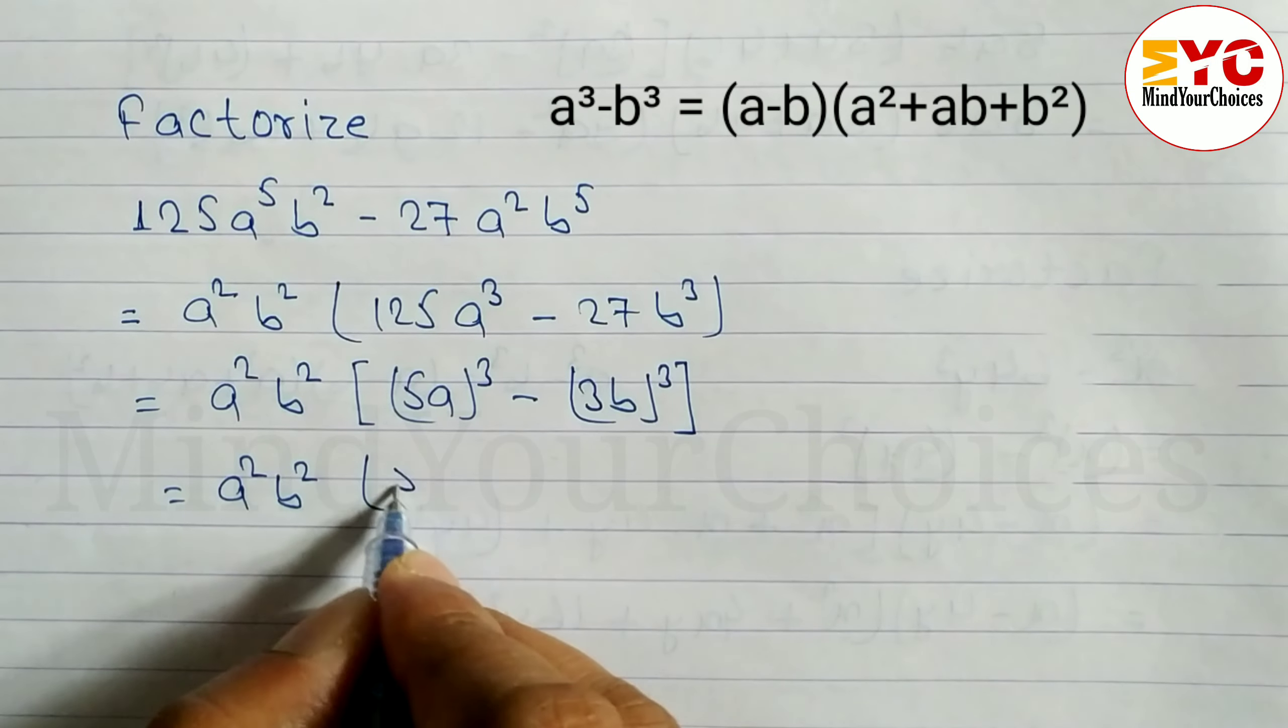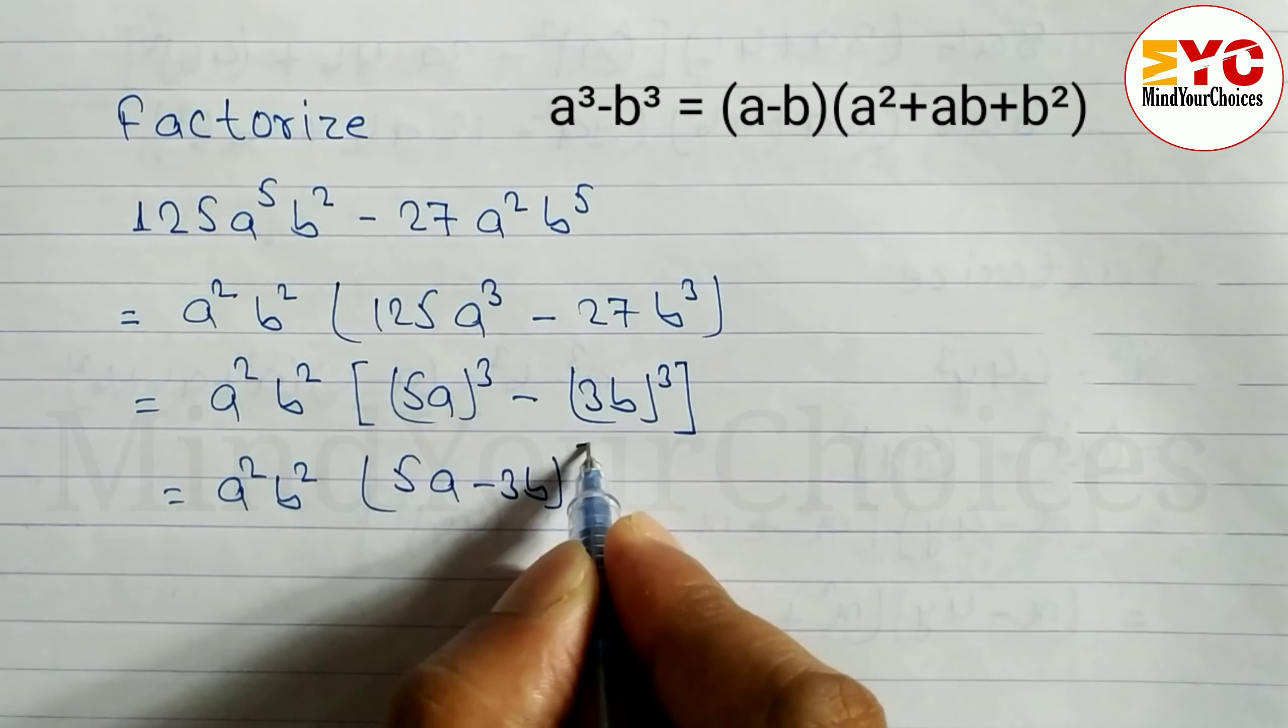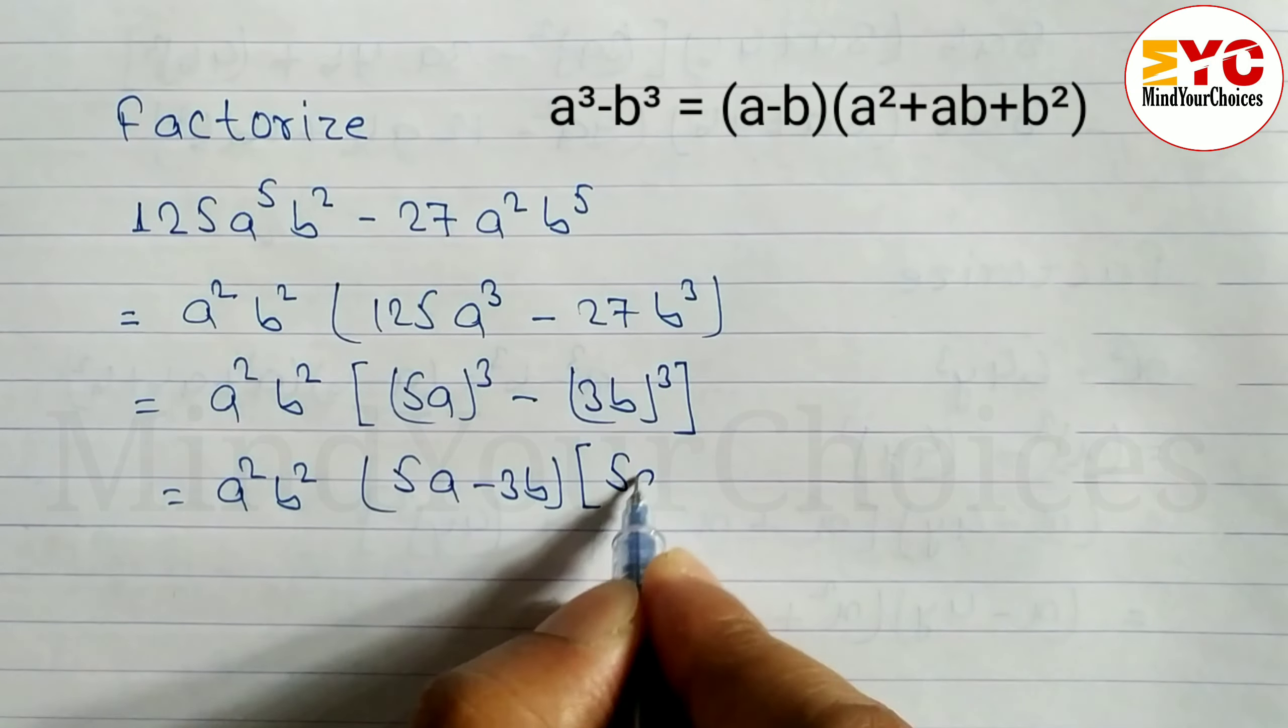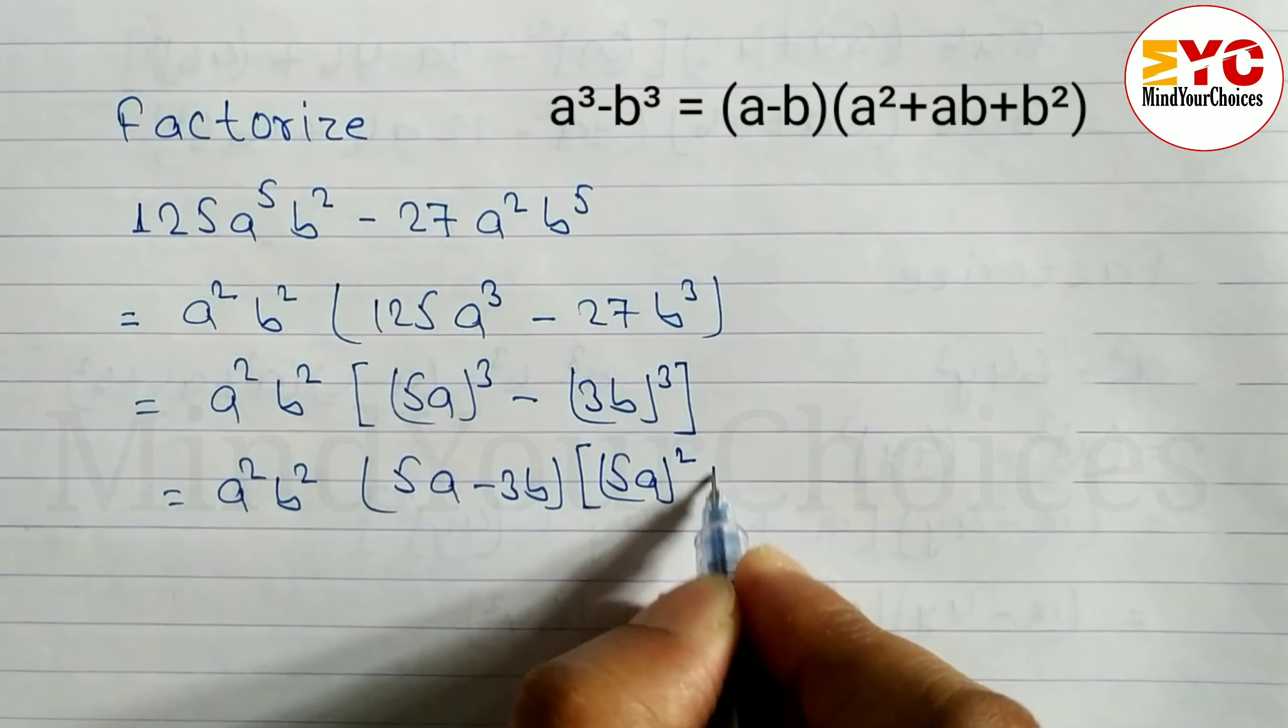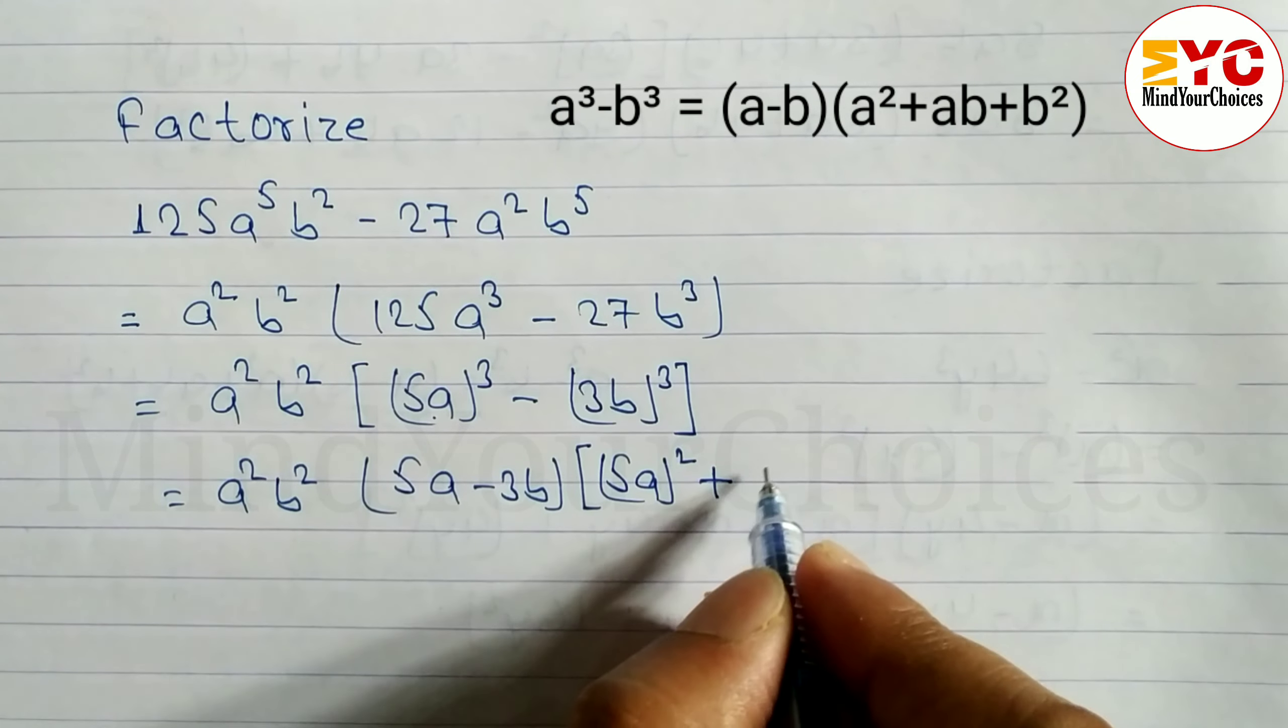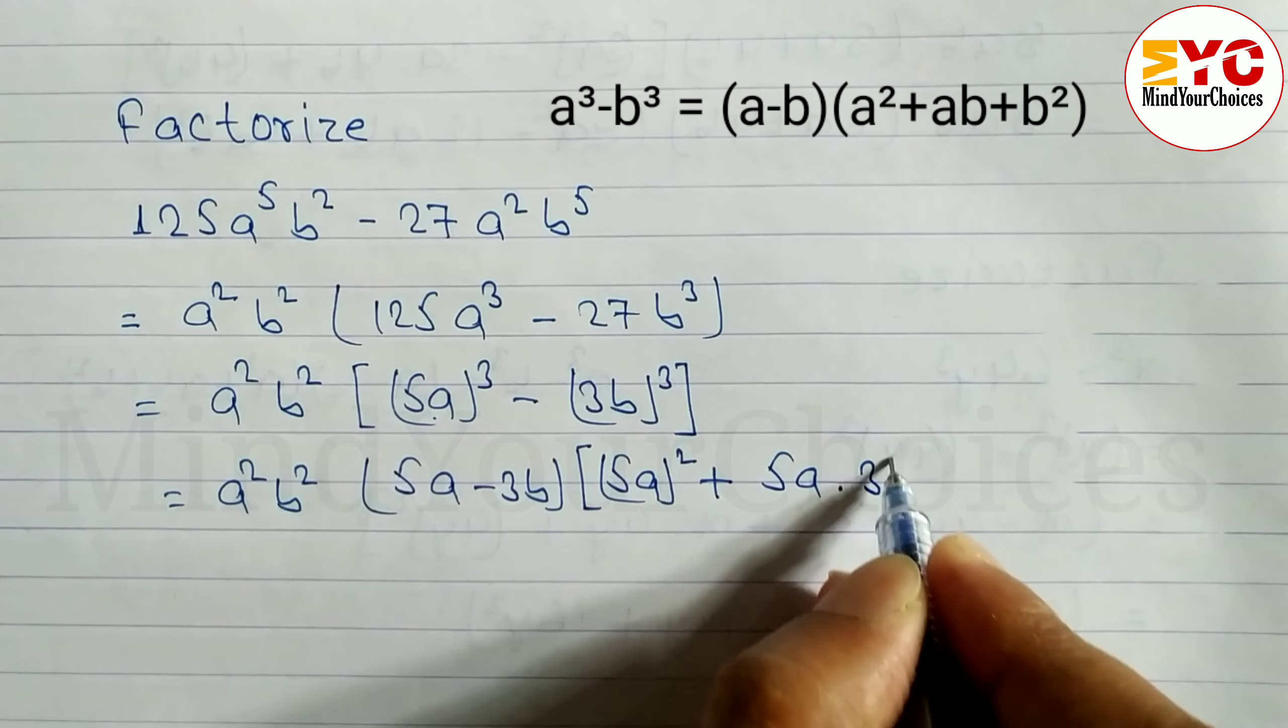So we can write (5a - 3b), then a², which is (5a)², plus ab - that's 5a times 3b - plus b².